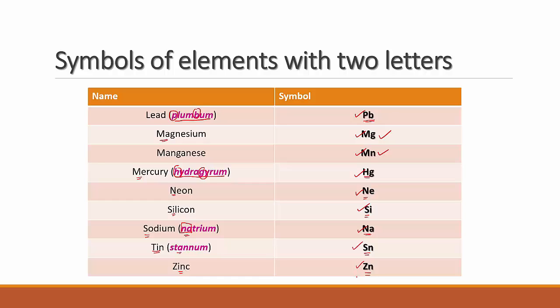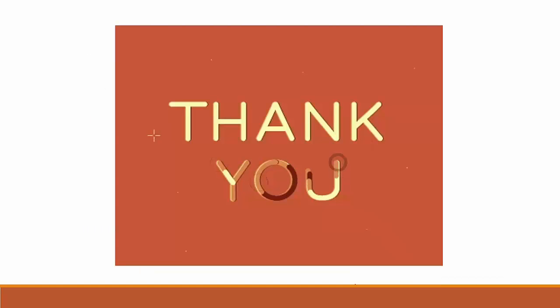This completes the representation of elements. We've seen what an element is, how to differentiate metals and non-metals, their properties, and how to represent elements using single letters, double letters, and Latin-derived symbols. This completes the first half of the chapter on the nature of matter. Thank you.